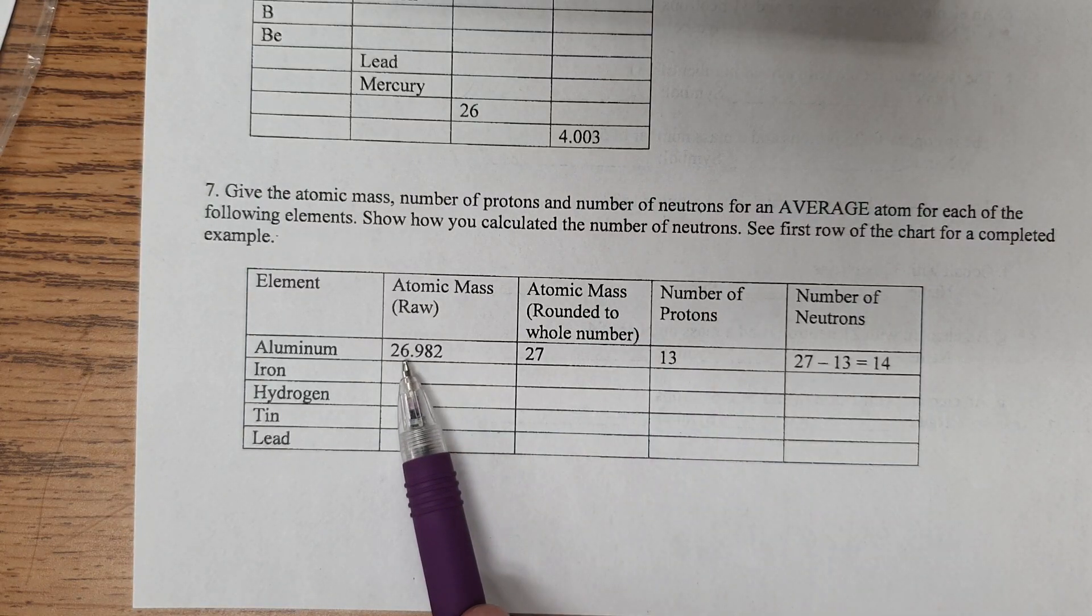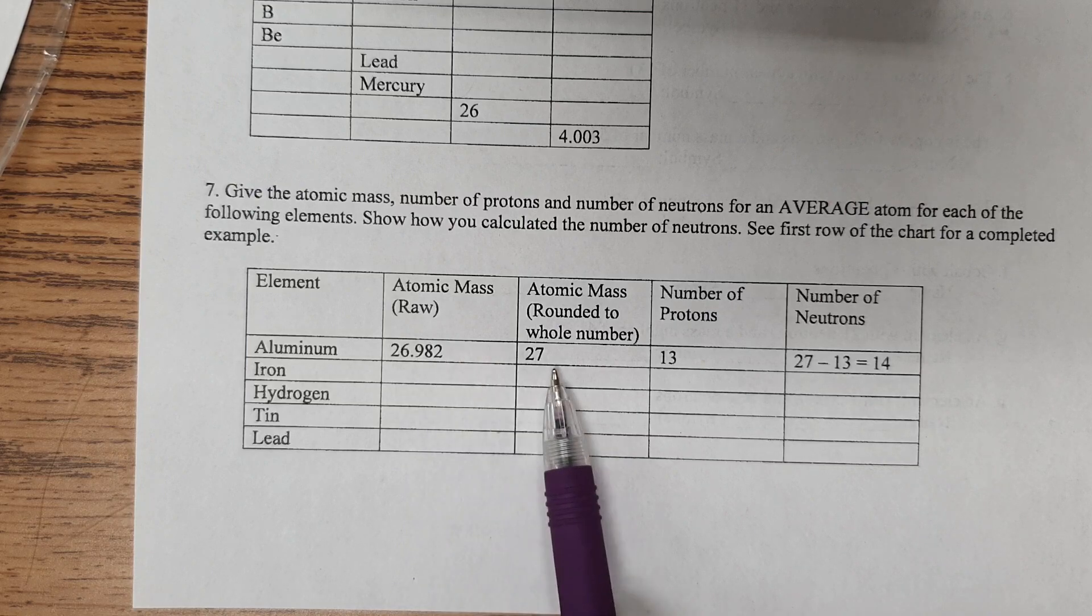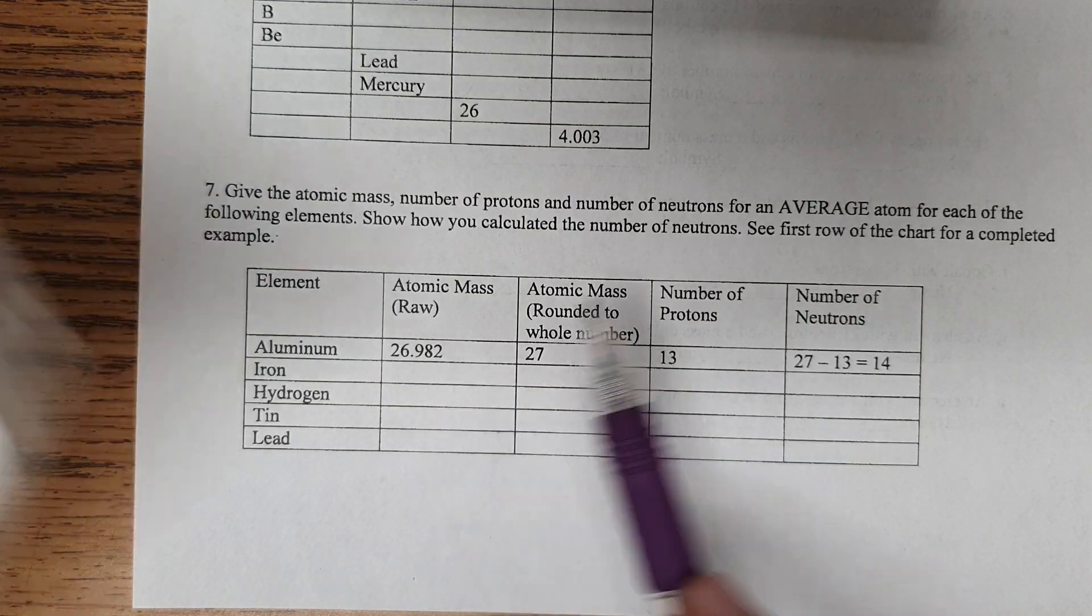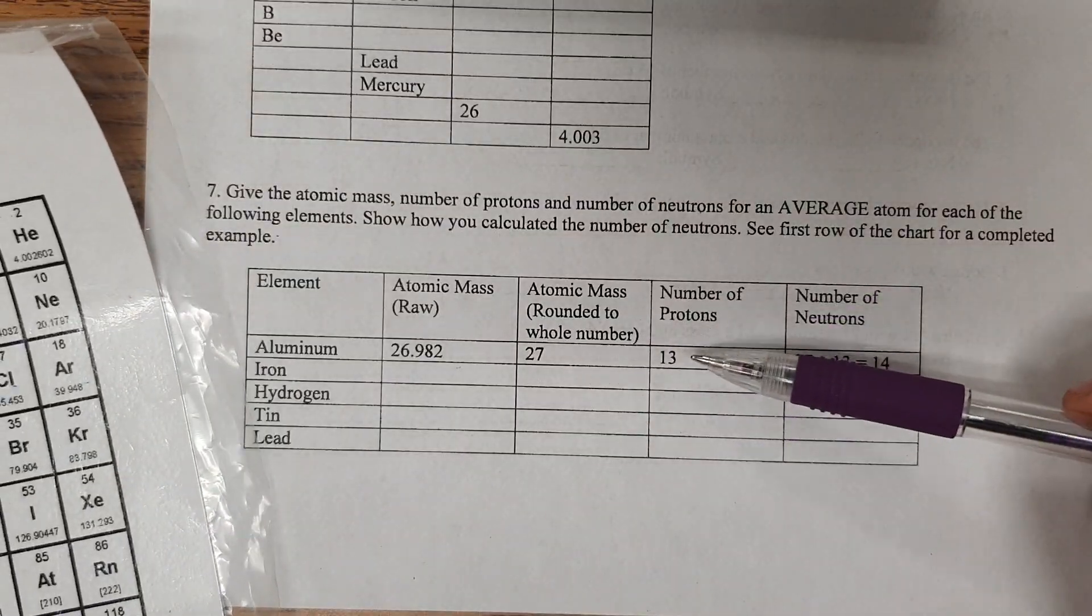Atomic mass rounded to the whole number. As a reminder, whole number means round to the nearest whole number, as in this decimal place right here. If it's next to 5 or above, you round up. If it's next to 4 below, you round down. So 26.982 rounds to 27. And then what you do for the number of protons, you have to look up aluminum on the periodic table, and you find here 13 protons. So that's where this number came from.